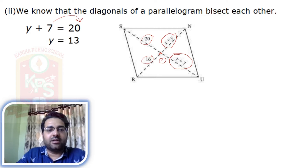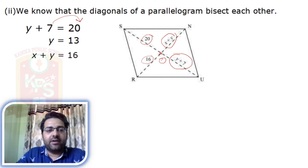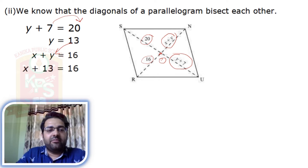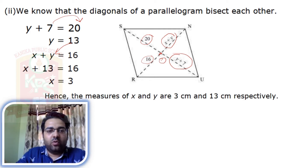So, 16 equals X plus Y, and Y plus 7 equals 20. First, from Y plus 7 equals 20, we get Y equals 20 minus 7, which is 13. Next, X plus Y equals 16, putting Y equals 13: X plus 13 equals 16, so X equals 16 minus 13, which is 3. Hence, the measures of X and Y are 3 cm and 13 cm respectively. This is how we find X and Y using the properties of a parallelogram.